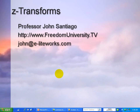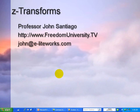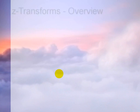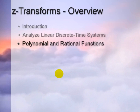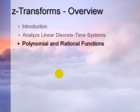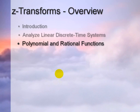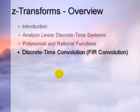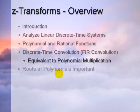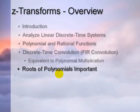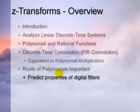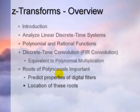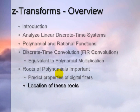Hello, I'm Professor Saniago, and today I'll be introducing the concept of Z-transforms. When we talk about Z-transforms, we are really using them to analyze linear discrete-time systems, as well as polynomial and rational functions. We'll see that the discrete-time convolution, or finite impulse response (FIR) convolution, is equivalent to doing polynomial multiplication. In addition, the roots of these polynomials are very important because they govern the properties of digital filters, in terms of the location of these roots.